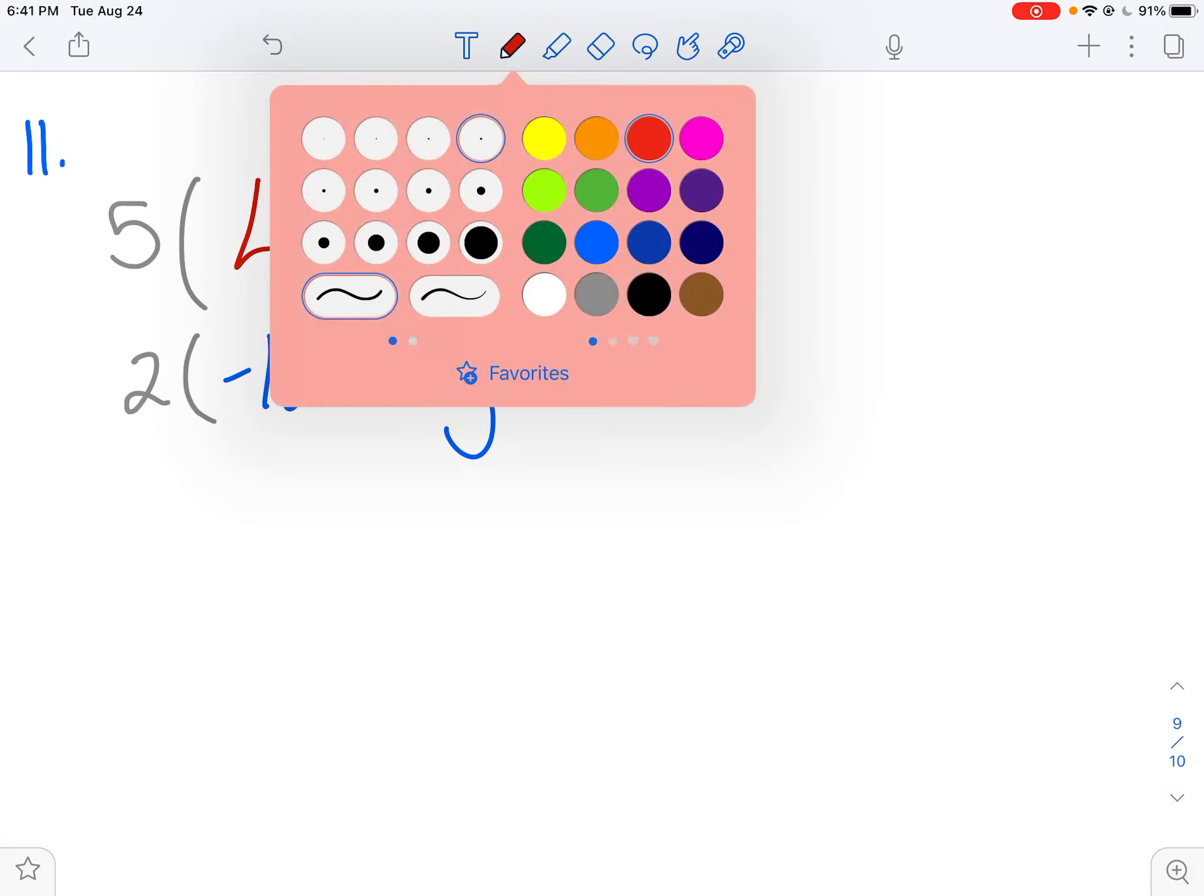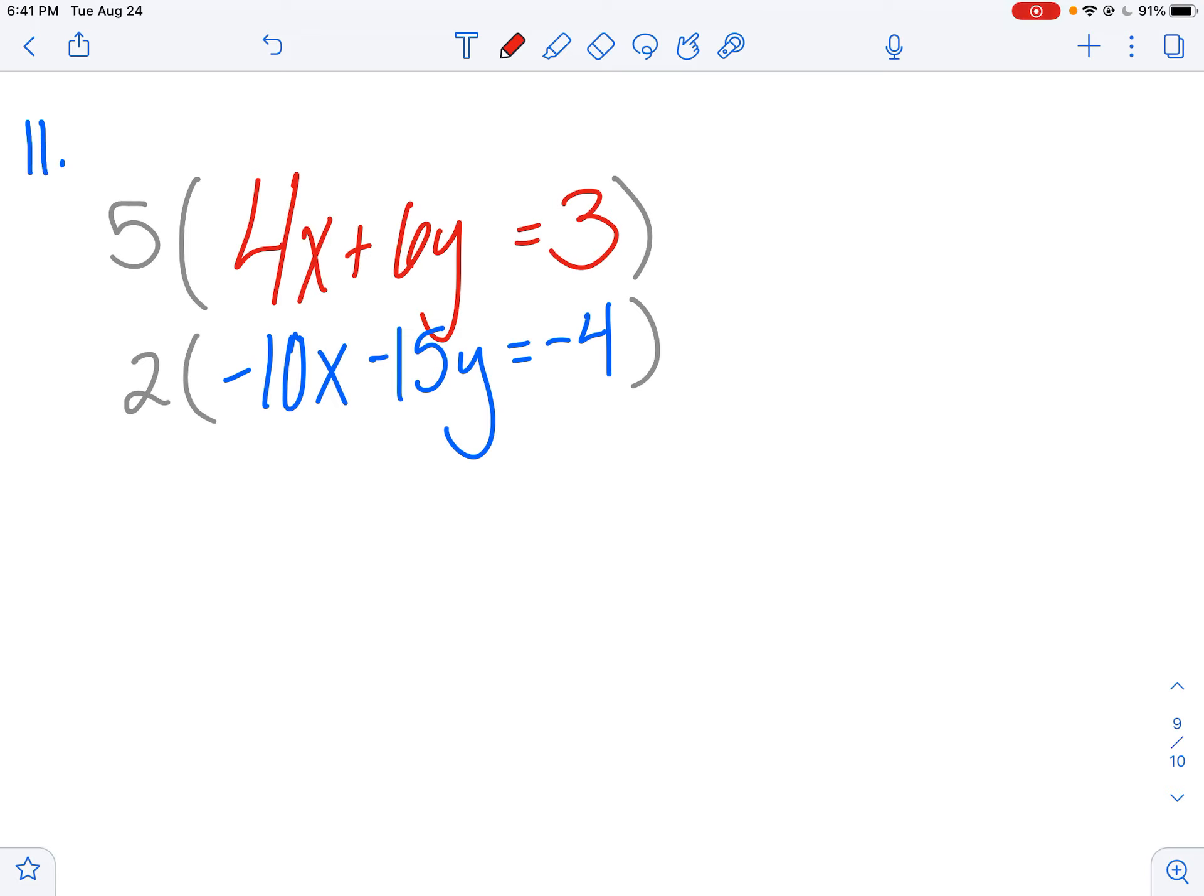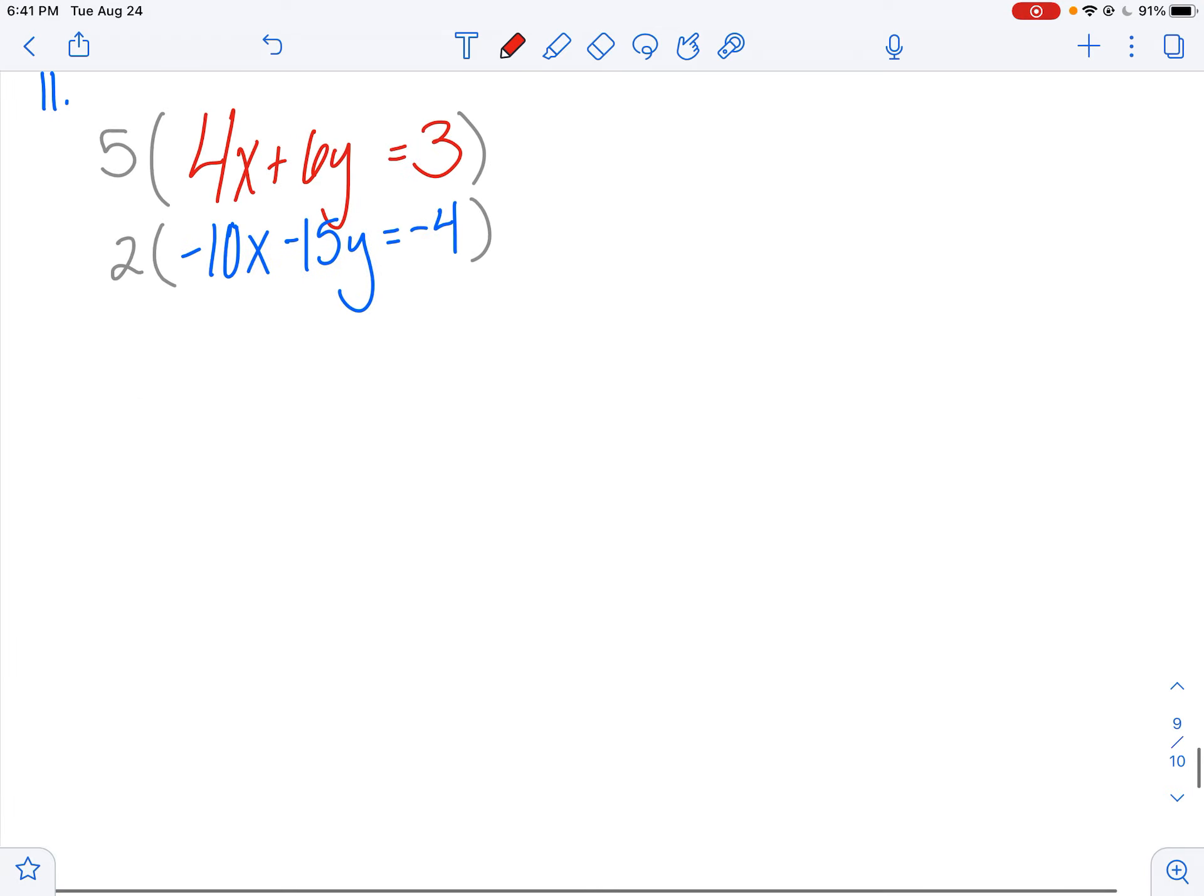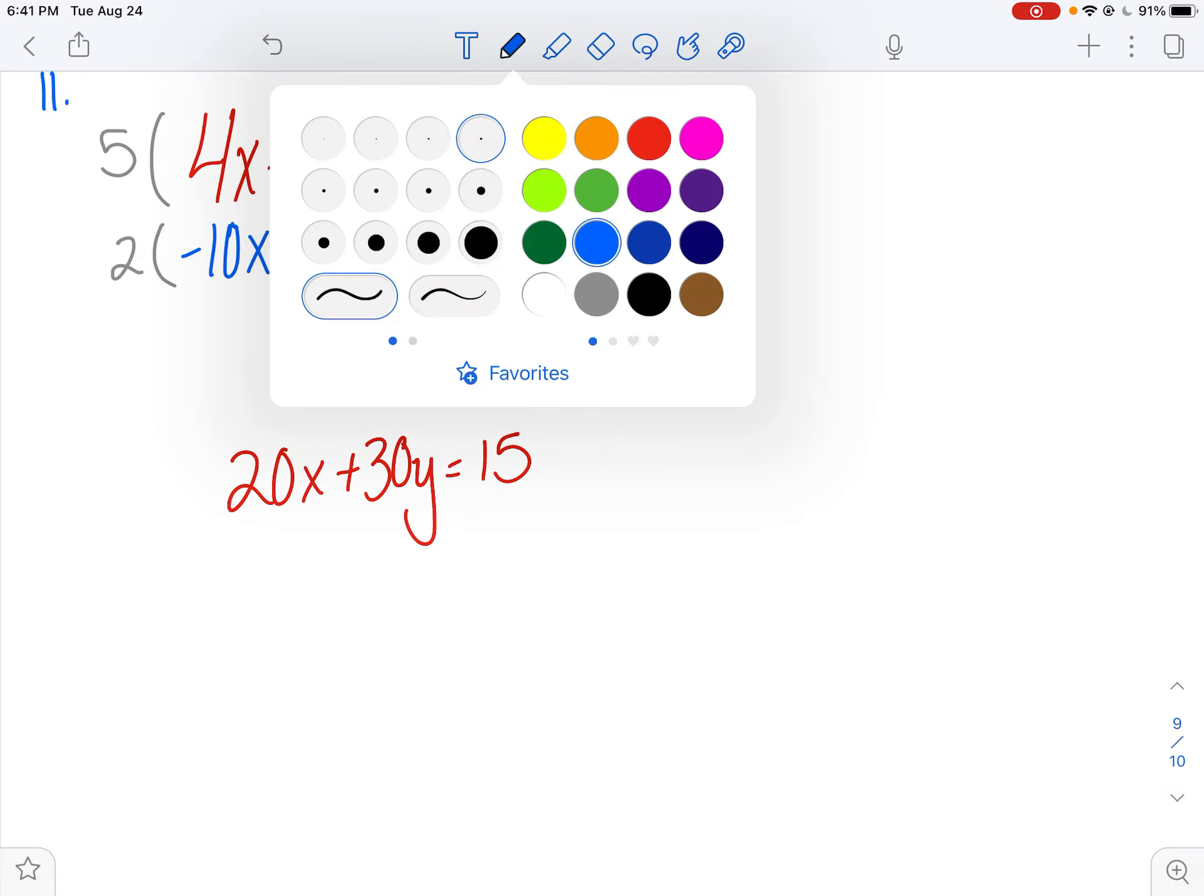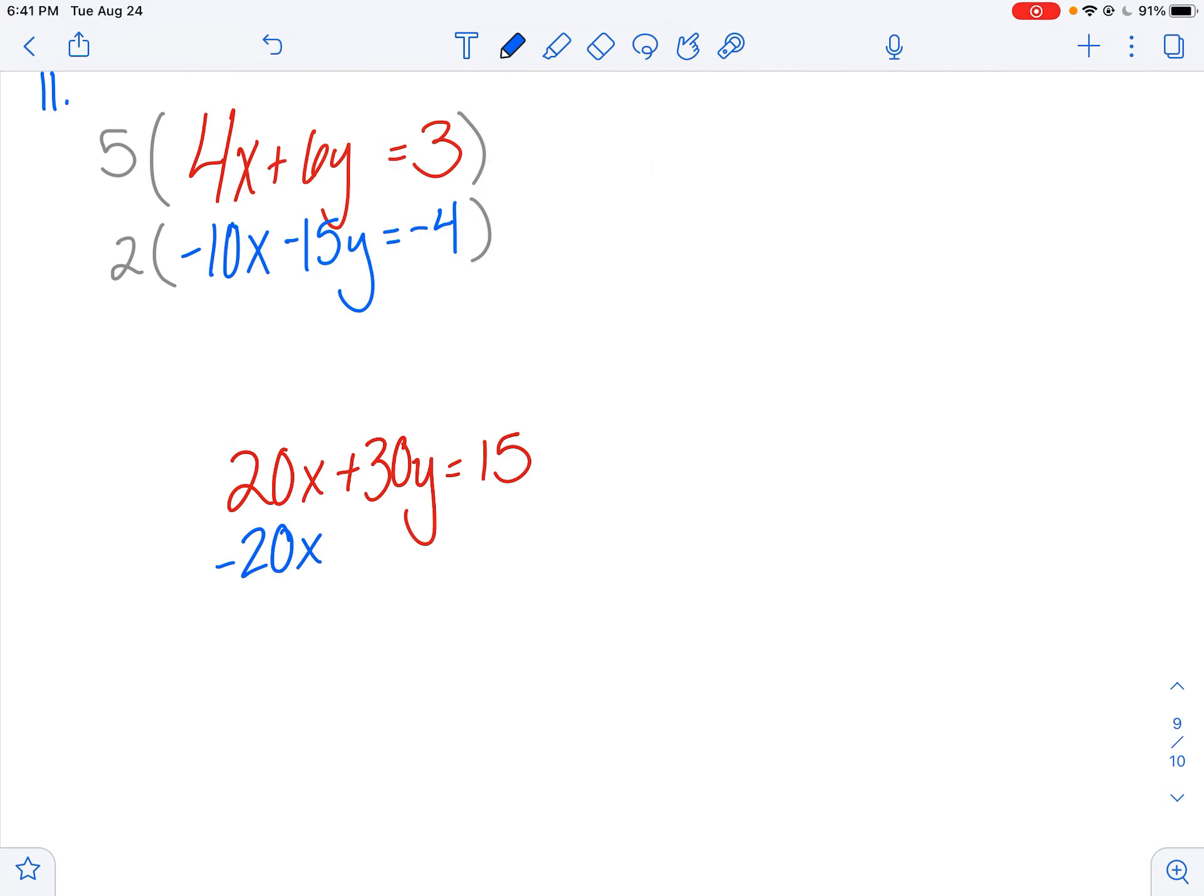And the reason that I'm doing that is because if I multiply everything by 5, then if I zoom out, I'll get 20x plus 30y equals 15, and I will get negative 20x minus 30y equals negative 8.